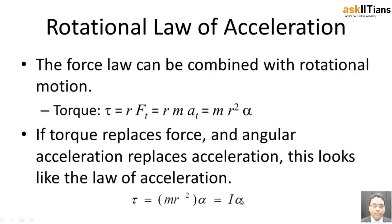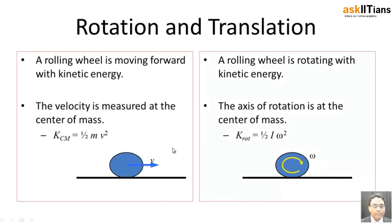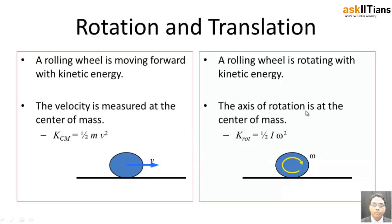To understand the forces and their results, we compare translation and rotation. In the case of translation, a wheel moves forward with kinetic energy — the center of mass is moving forward, so the kinetic energy of the center of mass is given by ½mv². In the case of rotational motion, a rolling wheel rotates with some kinetic energy, and this rotation occurs about the center of mass.